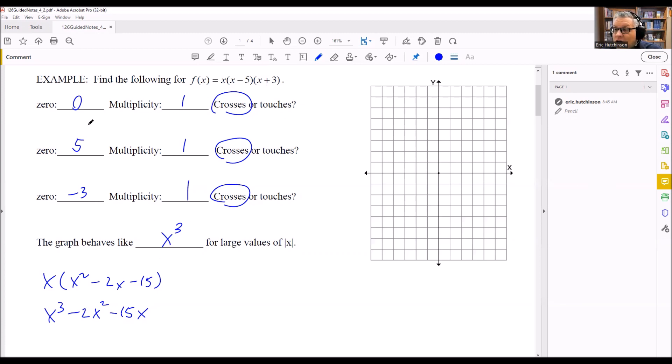So now let's go ahead and graph this. Now see that the graph crosses at 0. It crosses at 5. And at negative 3.